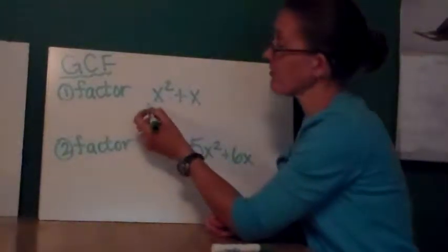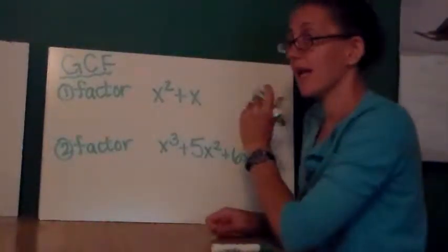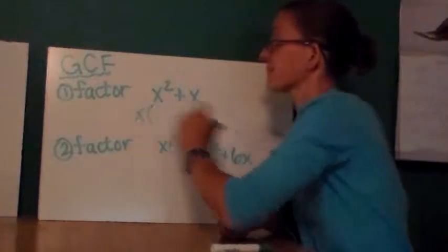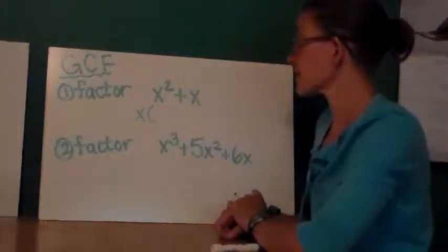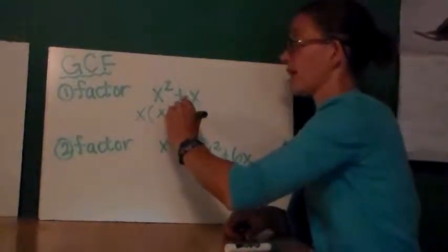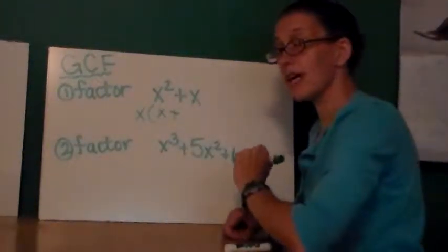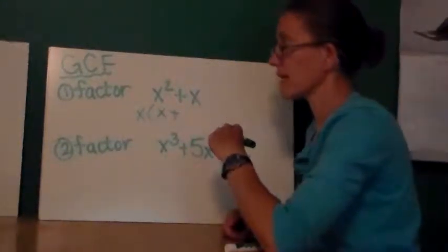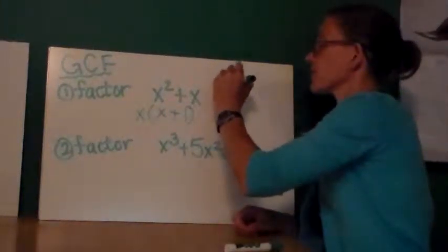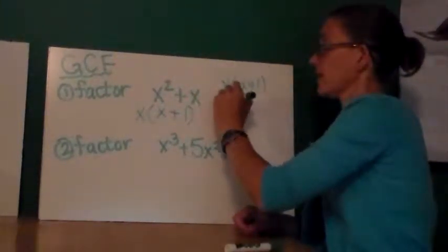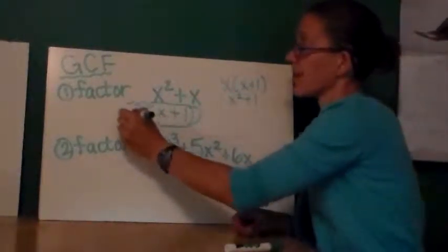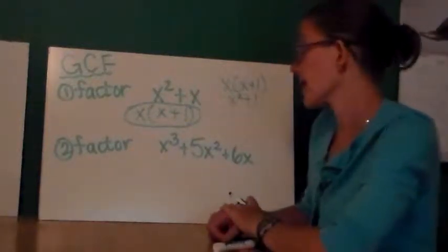So here, I'm asked to factor x squared plus x. I notice that both terms have x in them. So I'm going to factor out x. Well, I notice that x squared divided by x is just x, plus x divided by x is 1. I can always check this by using the distributive property. And I see that my answer is right. So this is my factorization: x times the quantity x plus 1.